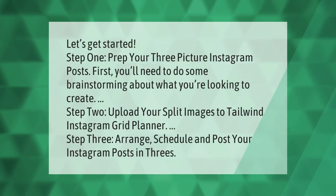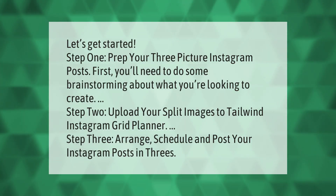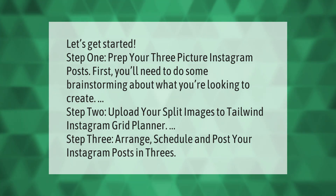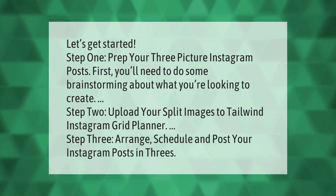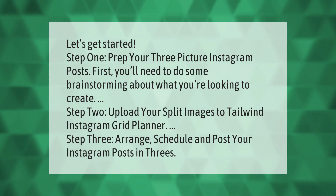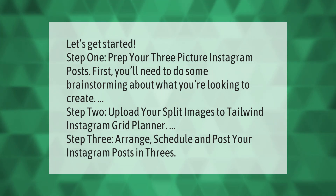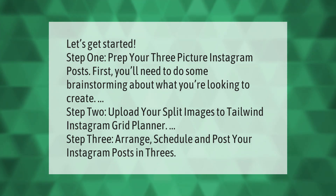Step one: prep your three-picture Instagram posts — first you'll need to do some brainstorming about what you're looking to create. Step two: upload your split images to Tailwind Instagram Grid Planner. Step three: arrange, schedule, and post your Instagram posts in threes.